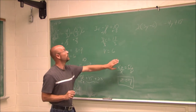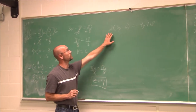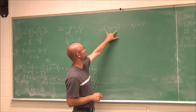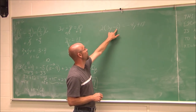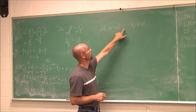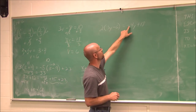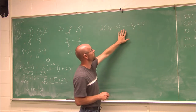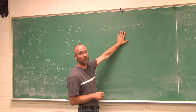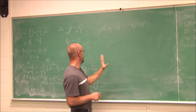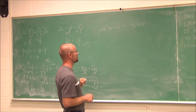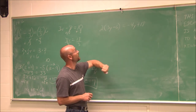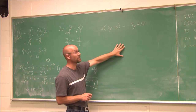Here's an example to try on your own: 2 times the quantity 3y minus 6 equals negative 4y plus 18. It's very similar to the last one — go ahead and try it. Good luck and keep practicing.